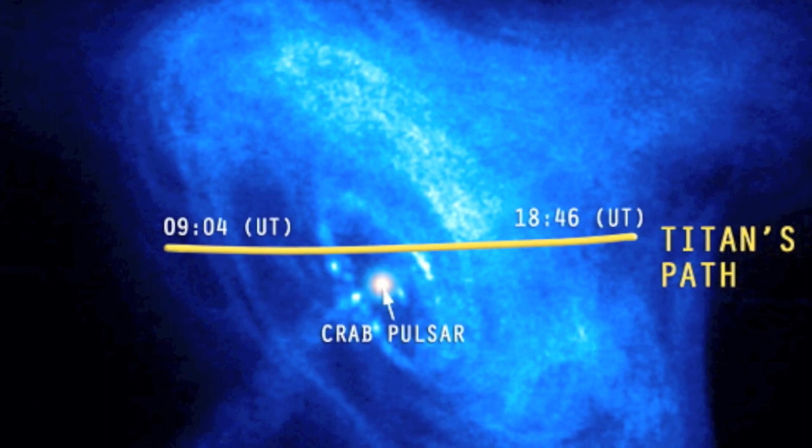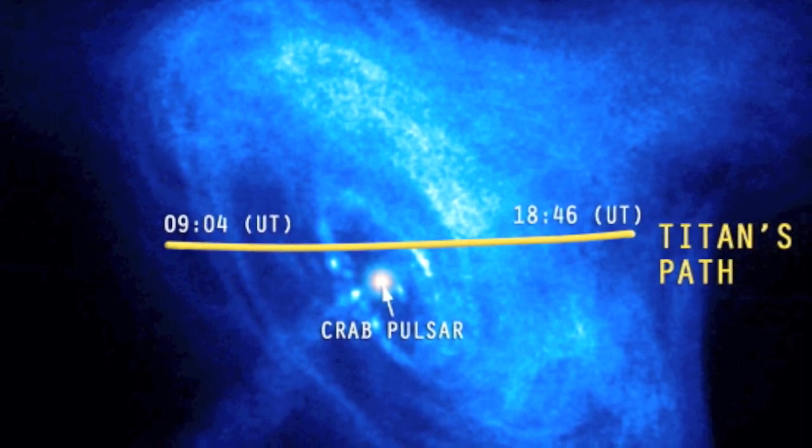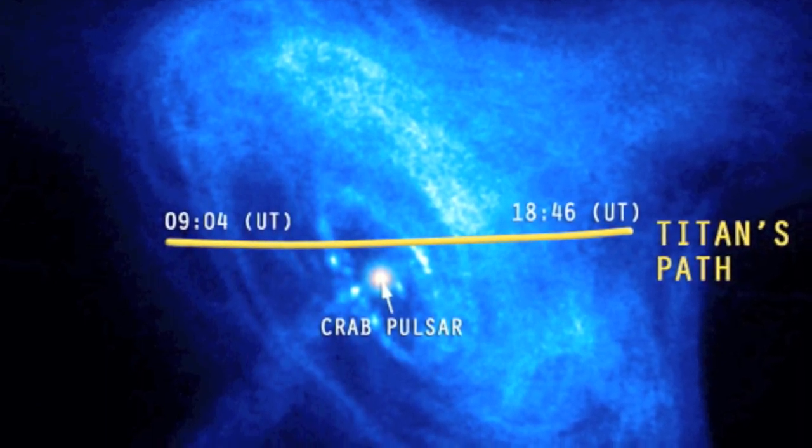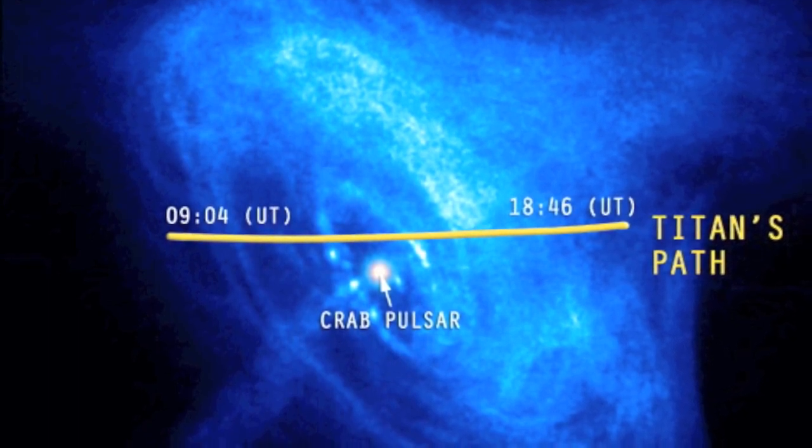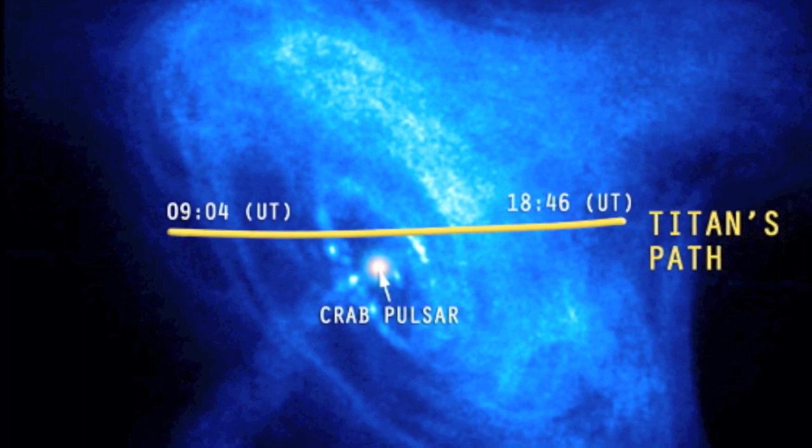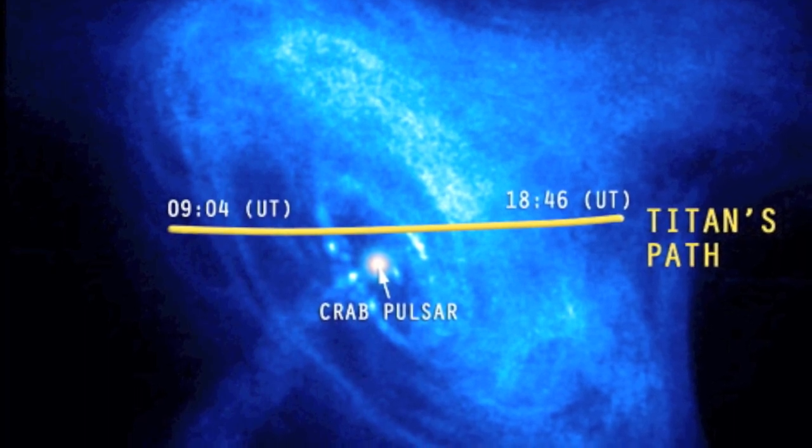Although Titan passes within a few degrees of the Crab Nebula every 30 years, it rarely passes directly in front of it. This won't happen again until the year 2267 and the event offered a unique opportunity to measure the thickness of Titan's atmosphere.